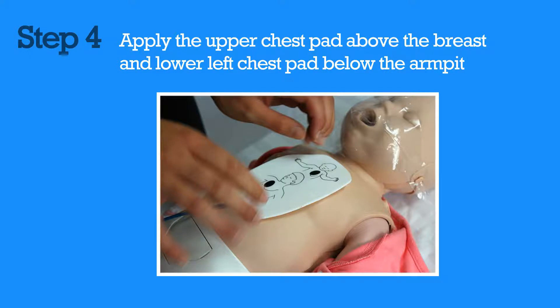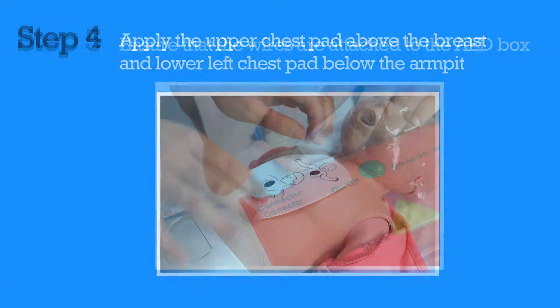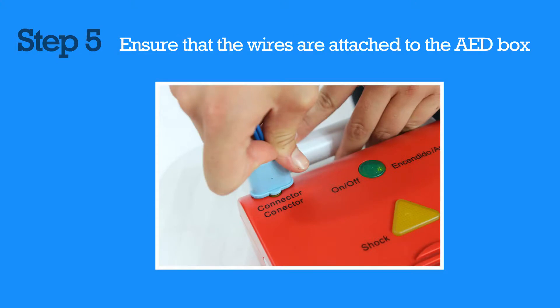Adult pads may be used if pediatric pads are unavailable. Apply the upper chest pad above the breast and the lower left chest pad below the armpit. Ensure that the wires are attached to the AED box.